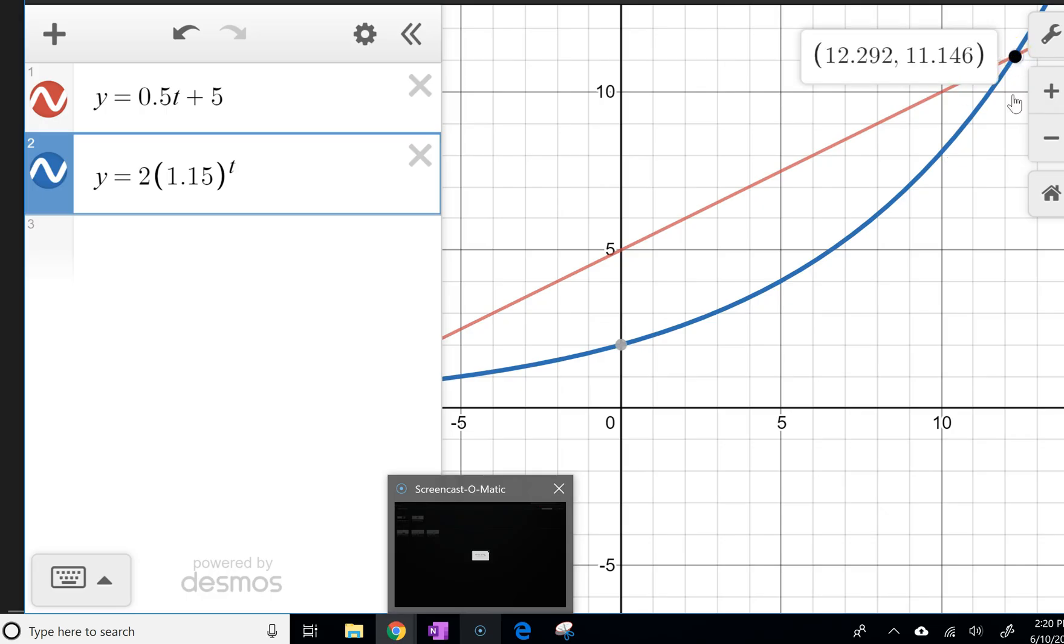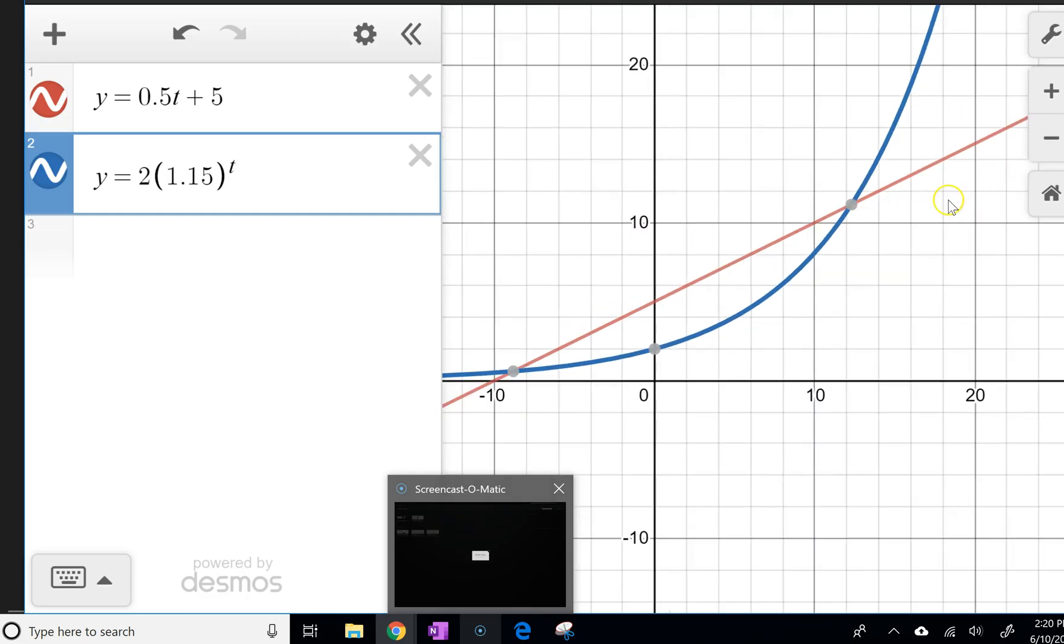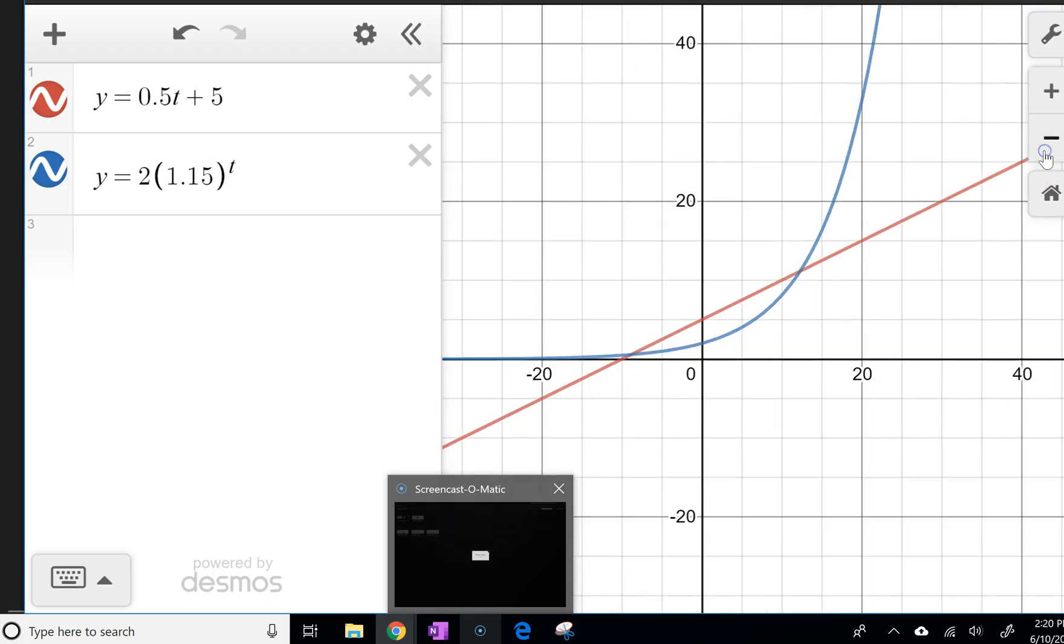But you'll see there's this point here where they are equal. So after 12.292 or 12.3 years, the company's incomes are going to be equal. And then from that point, if we continue to zoom out, you're going to see that over the long haul, which is what we're typically investing in when we're looking at like, say, saving for retirement, computafest, even though it started smaller, is exploding because of that exponential 15% growth, while calculorama is still increasing steadily. But at this point, I want to be invested in computafest.